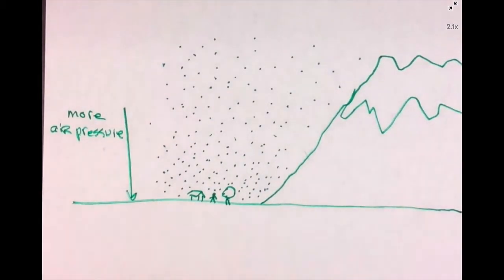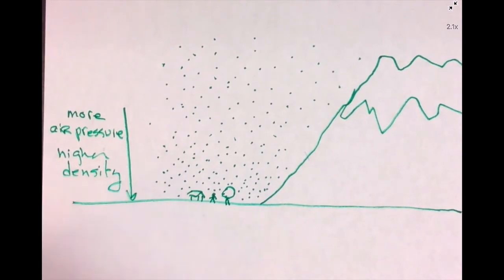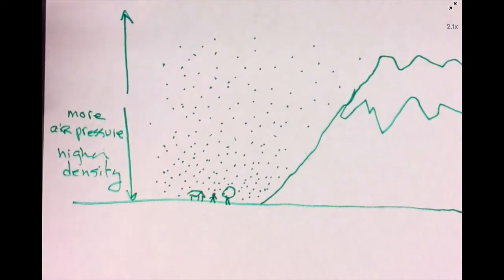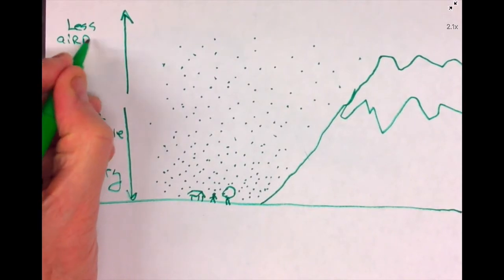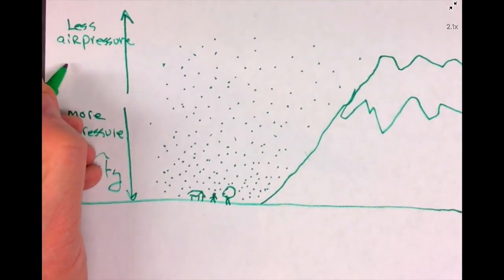So here we have more air pressure the further down you go and the higher the density. And as you go up in altitude, it's going to be the opposite—you have less air pressure and less density.